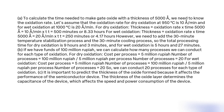For dry oxidation: thickness = oxidation rate × time; 5,000 = 10 Å/min × t; t = 500 minutes, or 8.33 hours. For wet oxidation: thickness = oxidation rate × time; 5,000 = 20 Å/min × t; t = 250 minutes, or 4.17 hours.